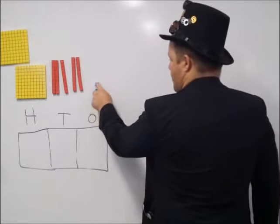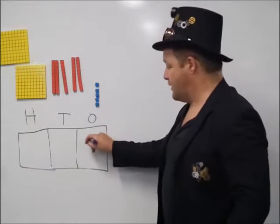And you can see I have one, two, three, four, five ones. Okay, put the five under the ones column.